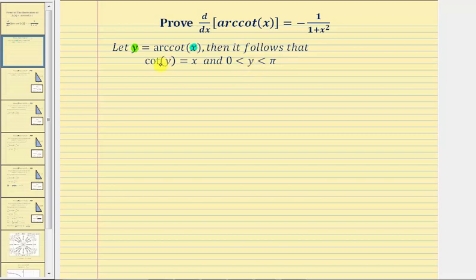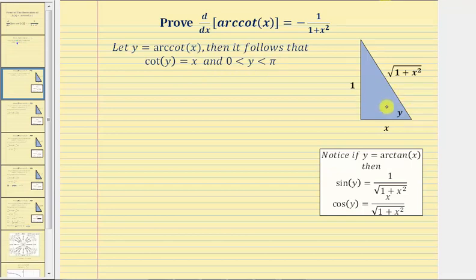Let's model angle y using a reference triangle where cotangent y equals x, or x over one. Since cotangent theta equals the ratio of the adjacent side to the opposite side, we label angle y, the adjacent side x, and the opposite side one. Using the Pythagorean theorem, the hypotenuse equals the square root of the quantity one squared plus x squared, which simplifies to the square root of one plus x squared.